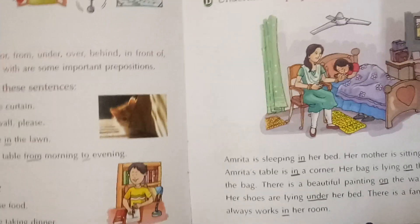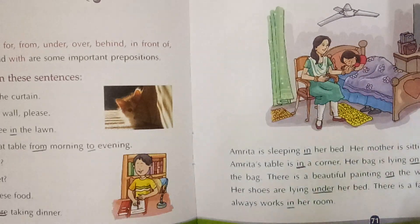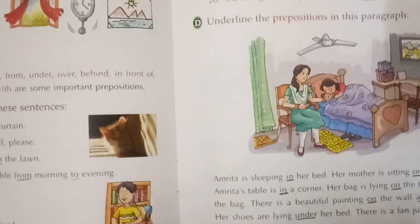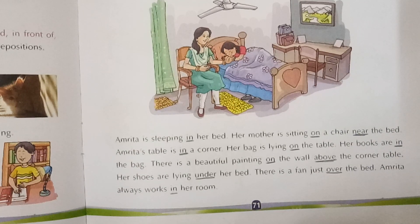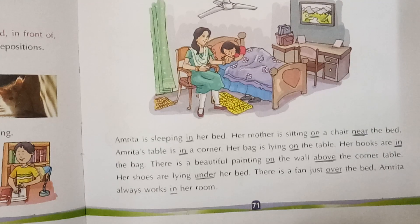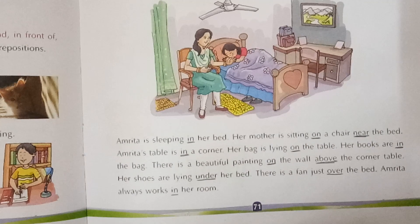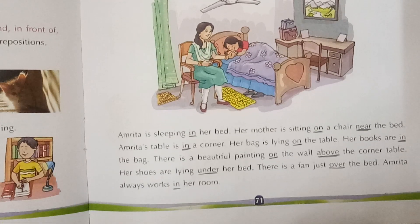Now come to the next part. Amrita is sleeping in her bed. Her mother is sitting on a chair near the bed. Amrita's table is in a corner. Her bag is lying on the table. Her books are in the bag. There is a beautiful painting on the wall above the corner. Her shoes are lying under her bed. You can see all these things in the picture. There is a fan just over the bed. Amrita always works in her room.